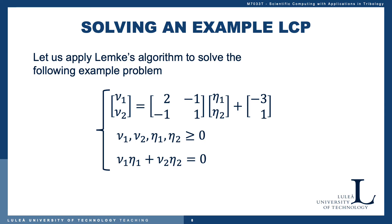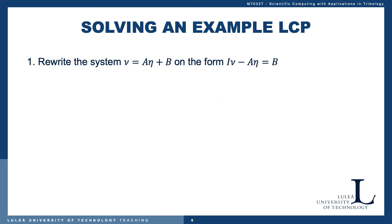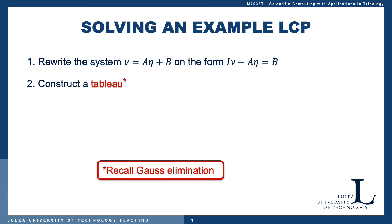Let us apply Lemke's algorithm to the following example problem: the two-by-two matrix A and the two-by-one vector B are given. Lemke's algorithm starts by rewriting the system on another form — we multiply by the identity matrix and move the A eta term to the left-hand side, leaving B on the right-hand side. This allows us to construct a tableau, similar to what we do in Gaussian elimination.